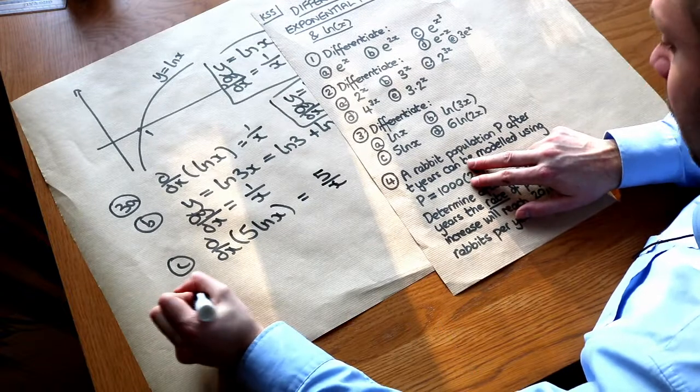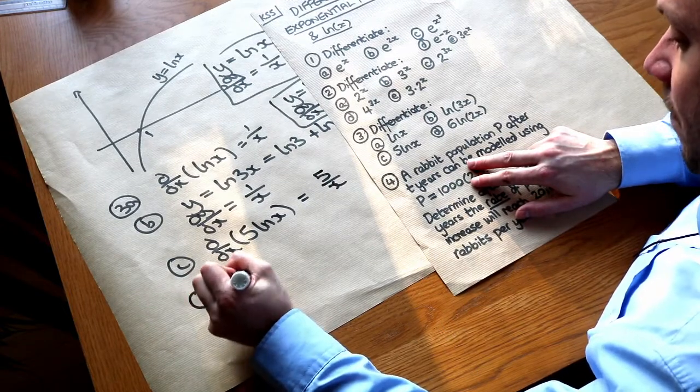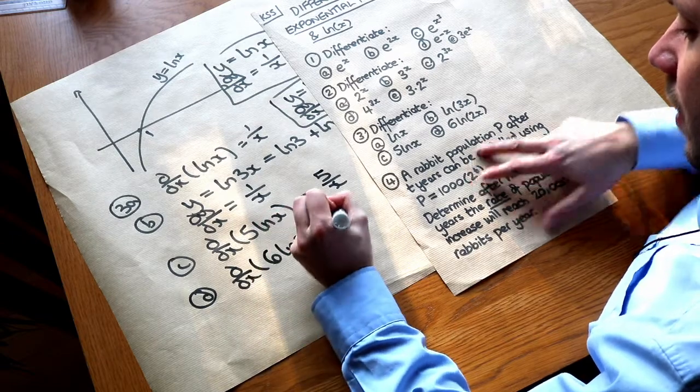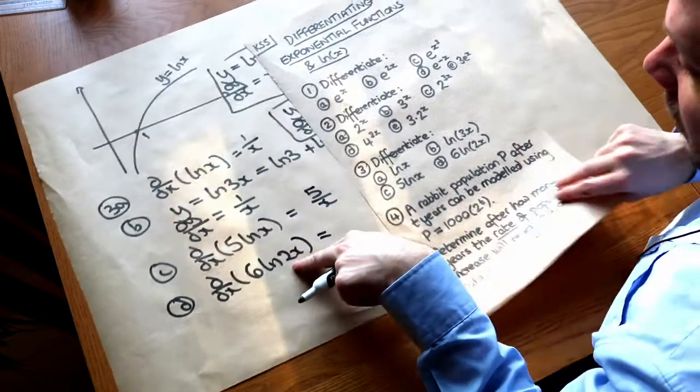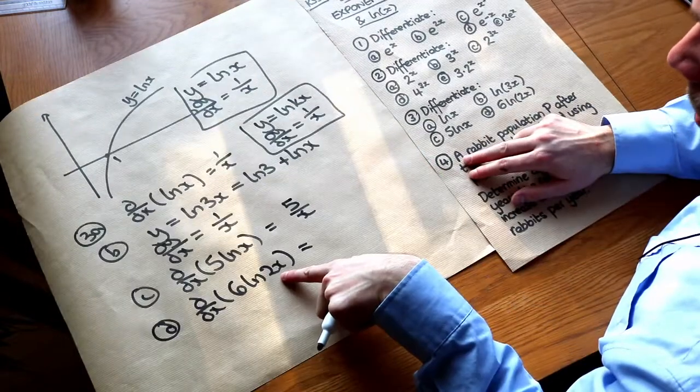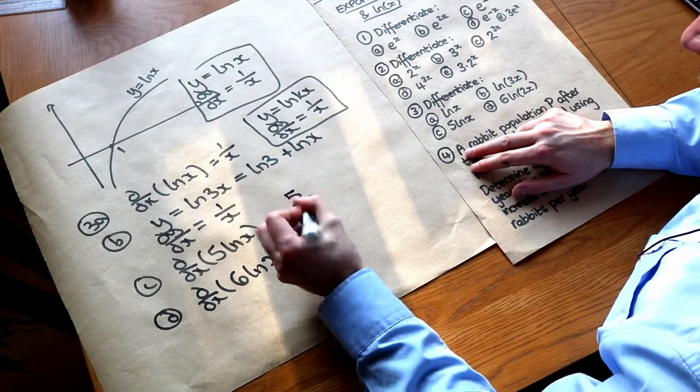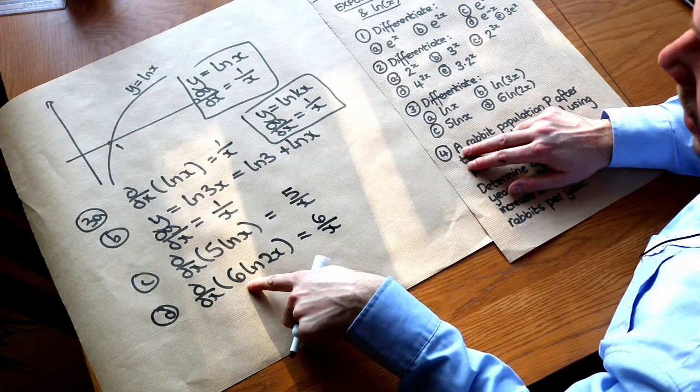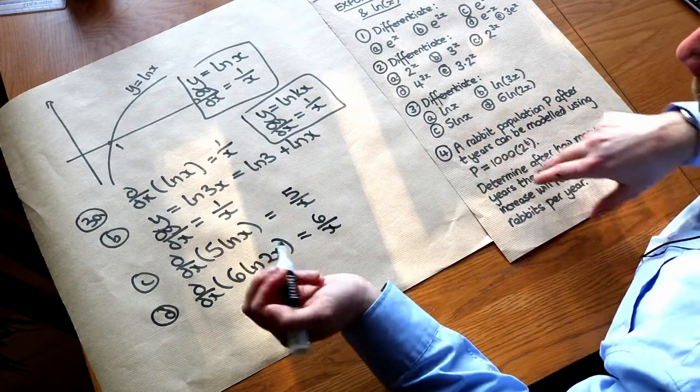And this last one here when we differentiate 6 ln of 2x. Now we know ln of 2x just becomes 1 over x. We ignore the 2. But we're timesing it by 6 so it becomes 6 over x. So that 2 has no effect on the gradient but the 6 does. It does scale the 1 over x by 6.